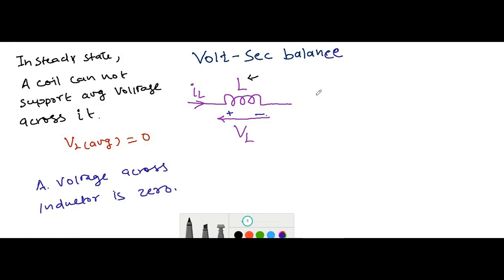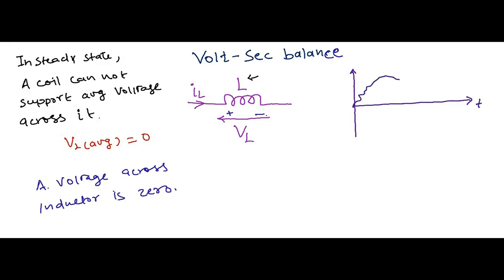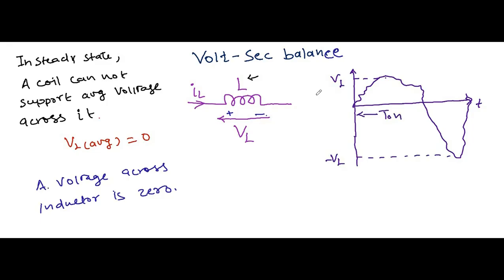If you draw an arbitrary waveform over the time period T — this is an arbitrary waveform — and let's say this represents the voltage VL across the inductor over time, then we can apply the area under curve concept to this waveform.